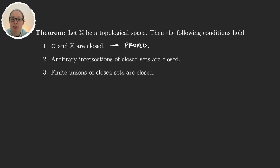And finally, finite unions of closed sets are closed. This one is also very similar to what we have — we said that finite intersections of open sets were open. To prove this theorem, all we need is the definition of a topology, because it's actually the only hypothesis we have. Now let's go ahead and prove the theorem.